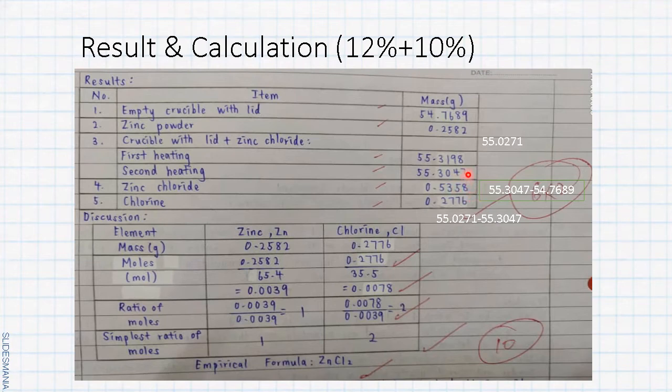We are using the mass of the empty crucible with lid. This is the mass of zinc chloride. If you want to find the mass of the chlorine, we are using the total mass of empty crucible with lid plus zinc powder minus the second heating. This is the mass of chlorine.